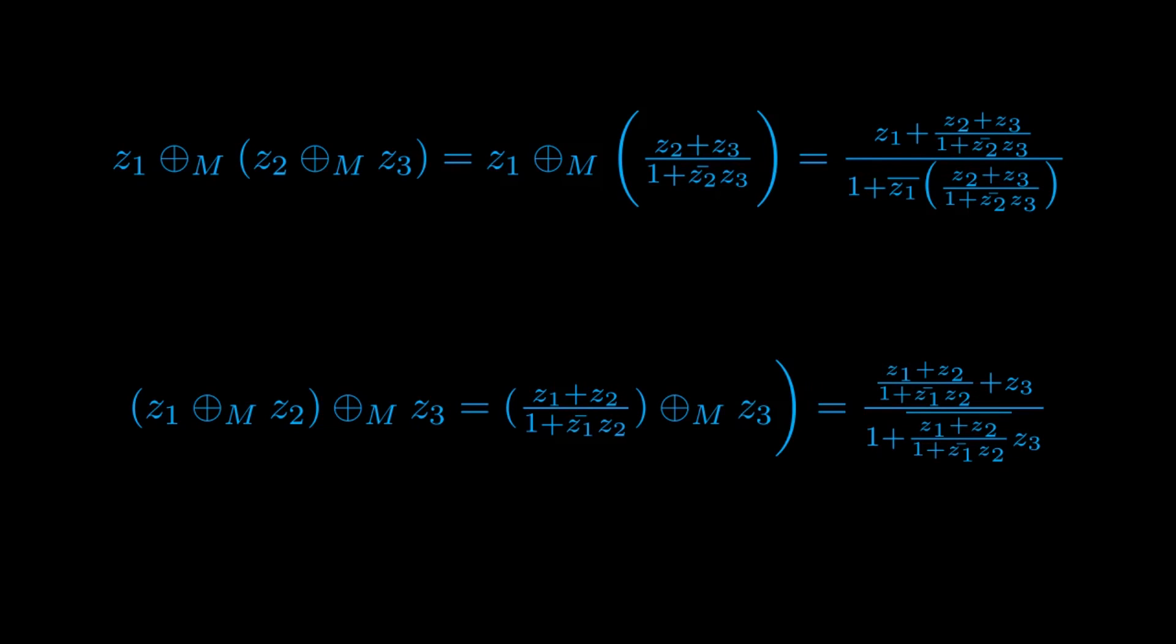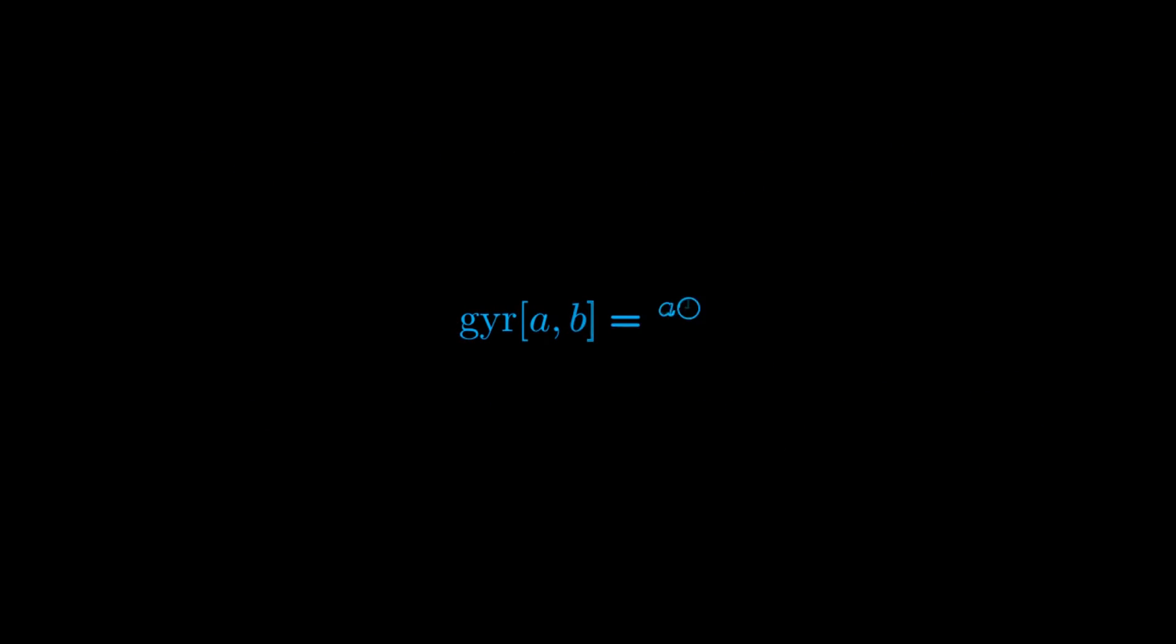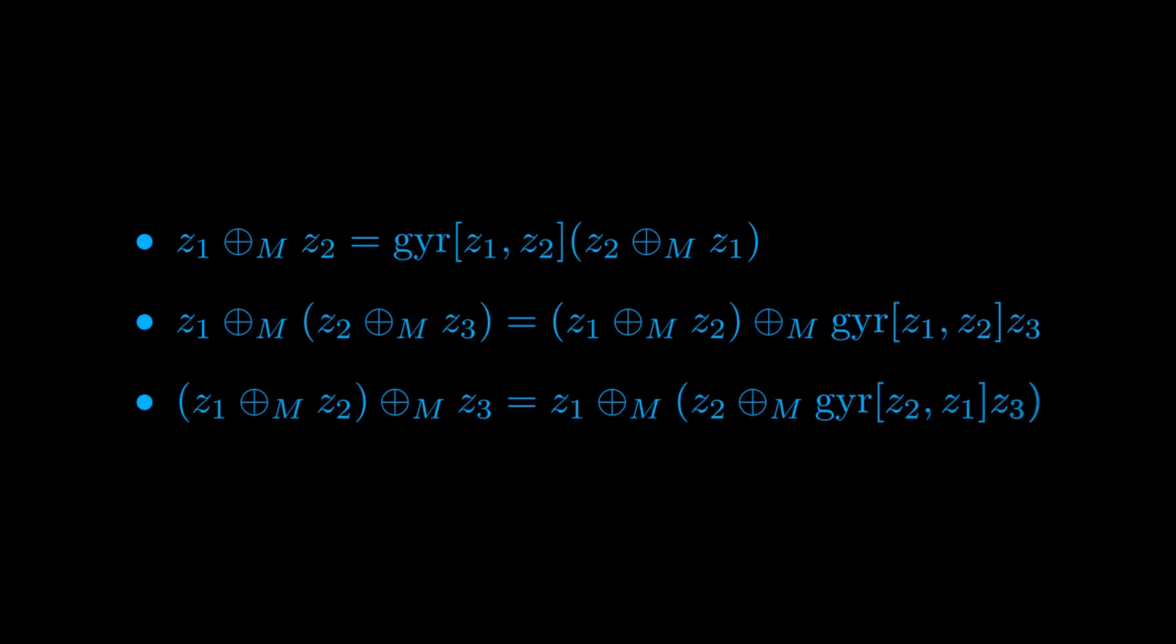However, inspired by the way in which we introduced the Thomas rotation operator, in the case of Einstein velocity addition, we will introduce an operator which we will call gyration, and define it in the following way. Our gyration, like before, repairs associativity and commutativity laws alike. This gives us the definition of a gyrogroup.